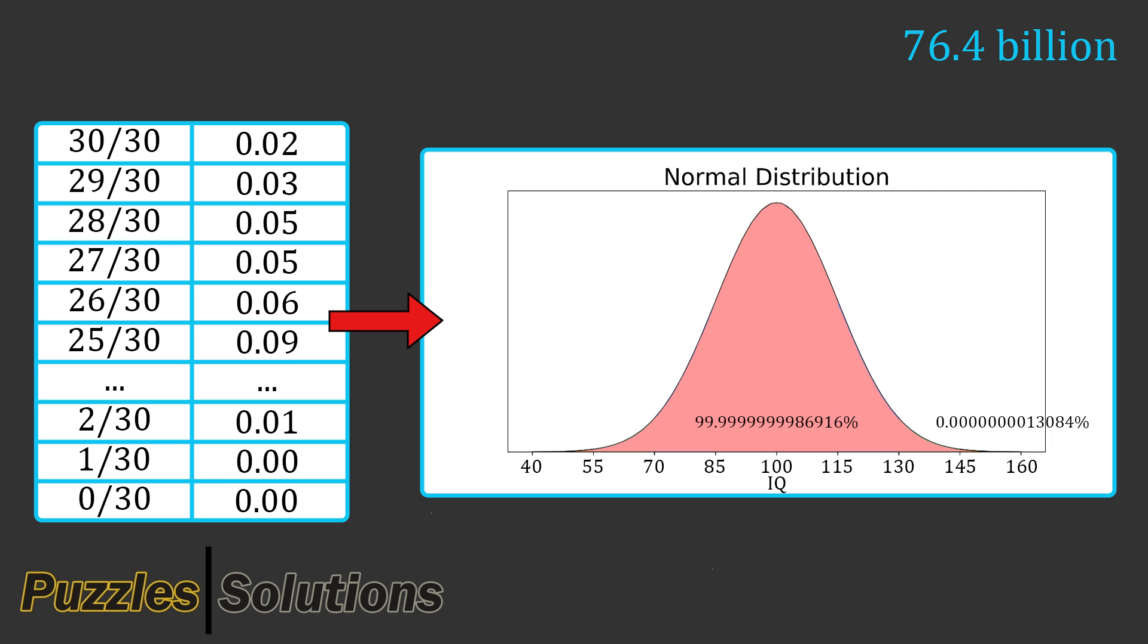To explain how I'm going to do this, imagine that we're flipping a coin. Flipping it once gives a 50% probability of heads and 50% probability of tails. Flipping it twice gives a 25% probability of 2 heads, 50% probability of 1 head and 1 tails, and 25% probability of 2 tails. And then for 3 flips, it's something like this.